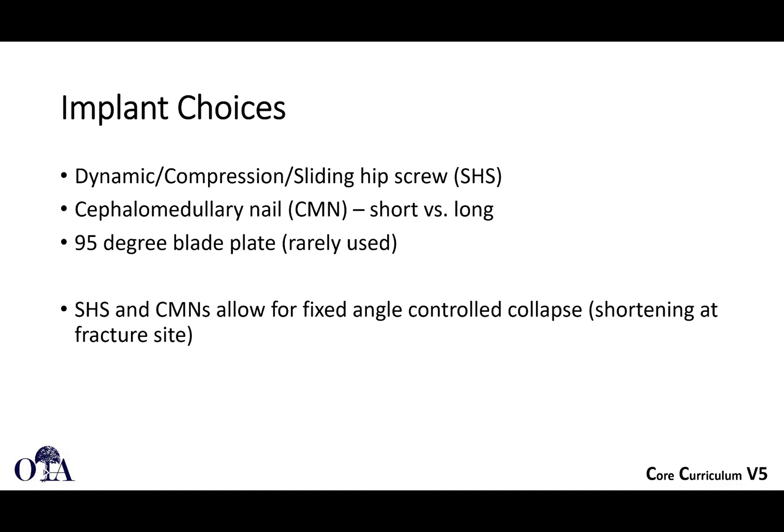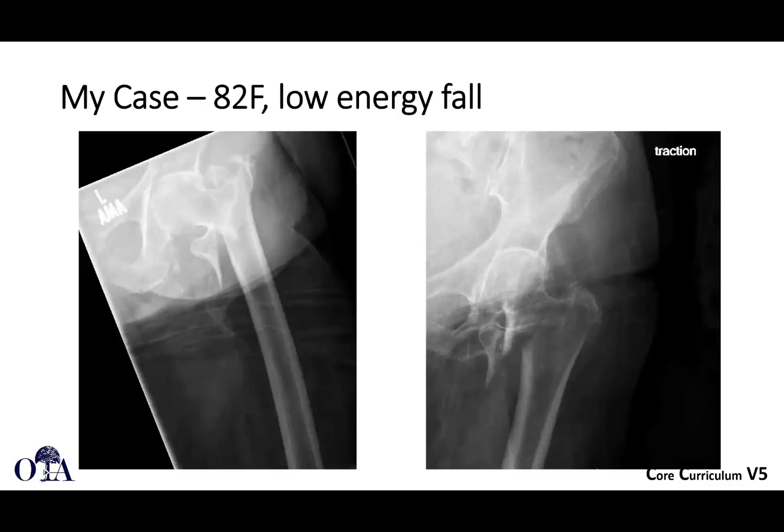What about implants? The sliding hip screw is a mainstay. Cephalomedullary nails are also very commonly used, with the question of whether to use long versus short nails. Blade plates are rarely used for these. The sliding hip screw and cephalomedullary nails allow for fixed-angle controlled collapse to allow some shortening at the fracture site to allow for healing.